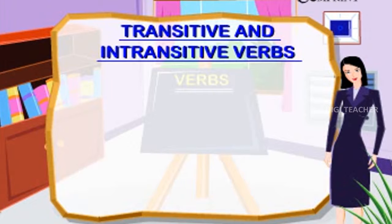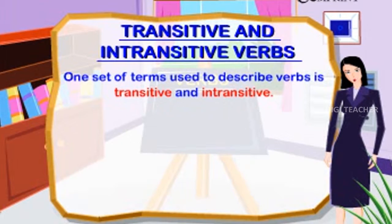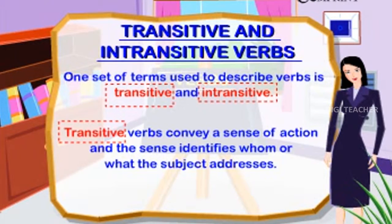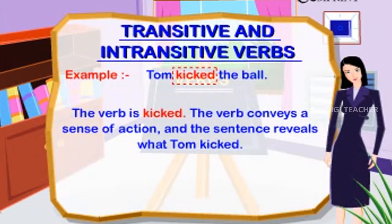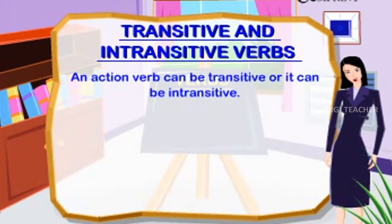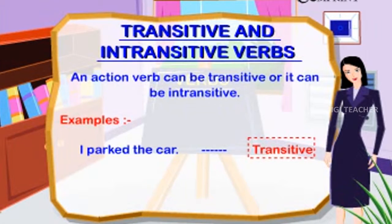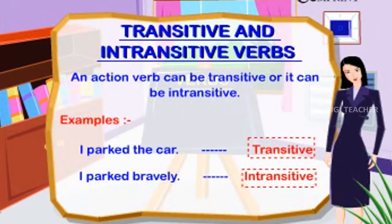Transitive and intransitive verbs. Transitive verbs convey action and identify whom or what the subject addresses. Example: 'Tom kicked the ball' — the verb 'kicked' conveys action and reveals what Tom kicked. An action verb can be transitive or intransitive. Examples: 'I parked the car' (transitive); 'I parked bravely' (intransitive).